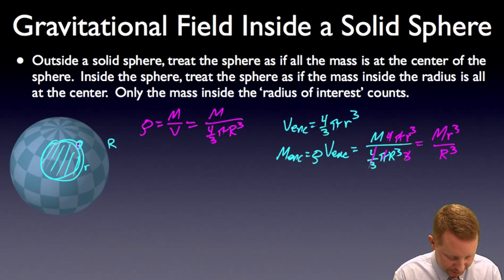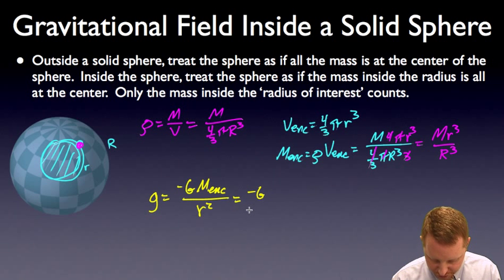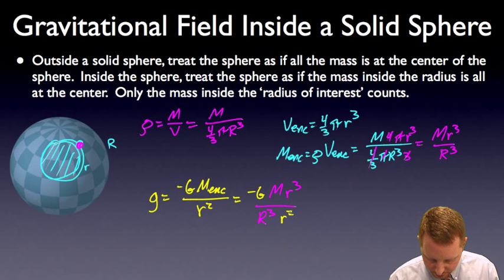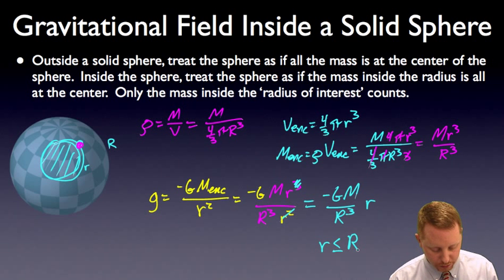Now we can find the gravitational field strength at a point inside the sphere. g equals minus G times the mass enclosed, divided by r squared. The mass enclosed is M r cubed over R cubed, divided by r squared. Simplifying, r cubed over r squared leaves r in the numerator, and R cubed is a constant, giving g equals minus G M over R cubed, times r — valid for any radius r inside the total radius R of the sphere.